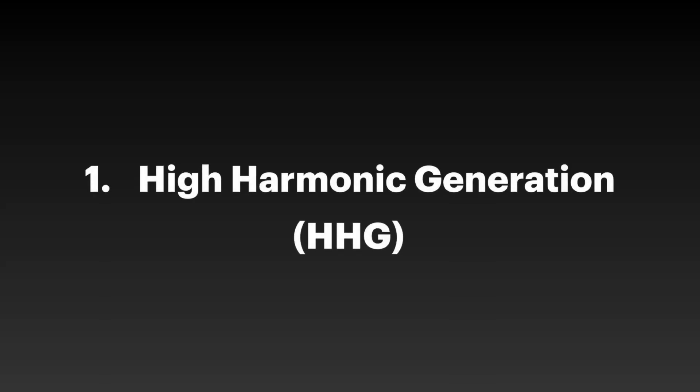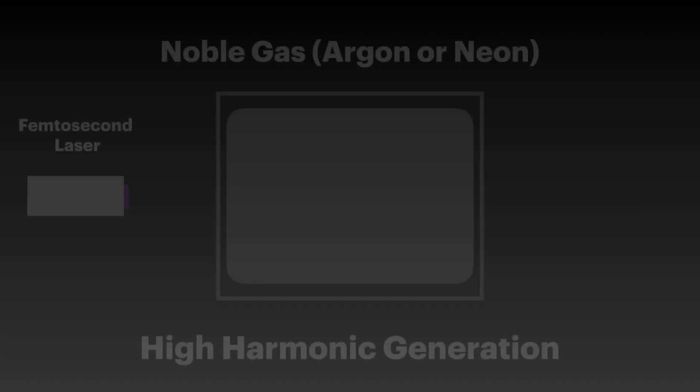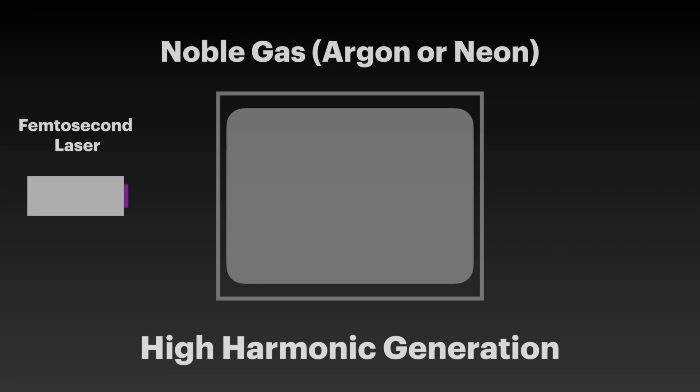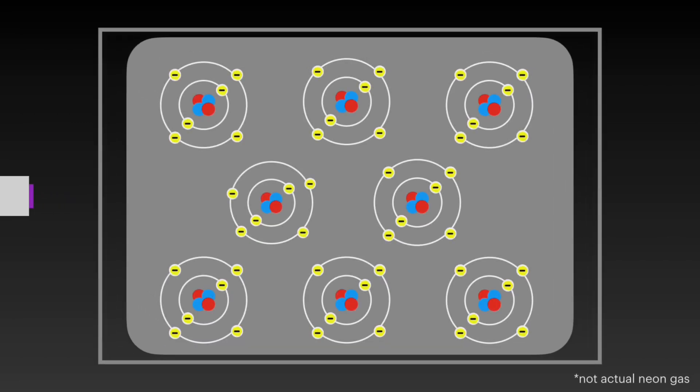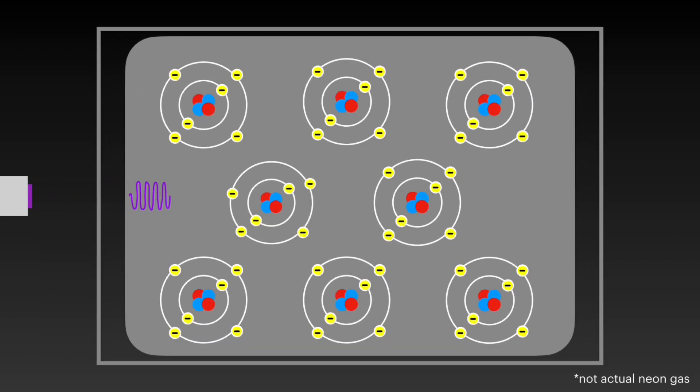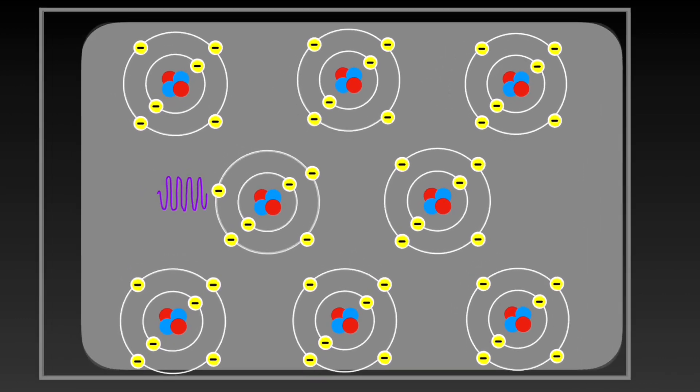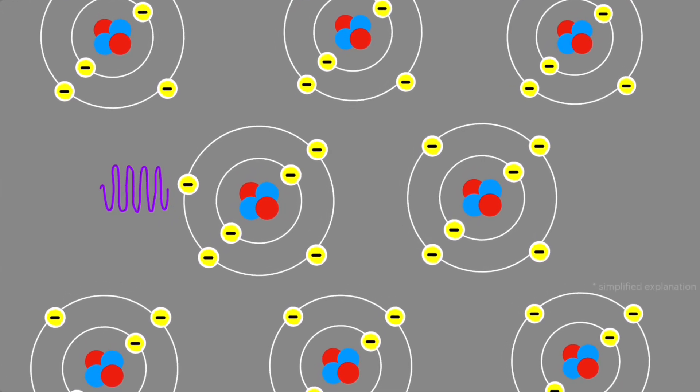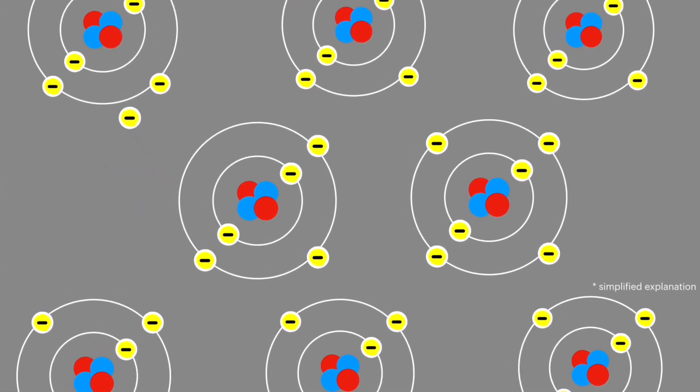First, they had to use a method called high harmonic generation to create attosecond light pulses. To perform this method, light from a high-frequency femtosecond laser is shined into a certain type of noble gas, typically argon or neon. This already high-frequency light hits the electrons in the argon atoms. The electrons then absorb the high-frequency photons, which carry lots of energy, and are freed from the atom, allowing them to float around in the vacuum.